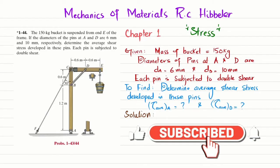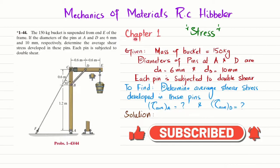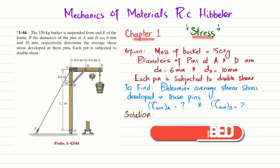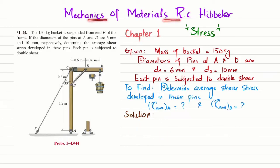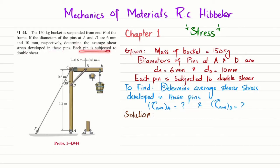Welcome back. In this video we are going to solve Problem 1-44, taken from Chapter 1 'Stress' in the book Mechanics of Materials by RC Hibbeler. The statement is: the 150 kg bucket is suspended from point E of the frame. If the diameter of the pin at A and D are 6 millimeter and 10 millimeter respectively, determine the average shear stress developed in these pins. Each pin is subjected to double shear.